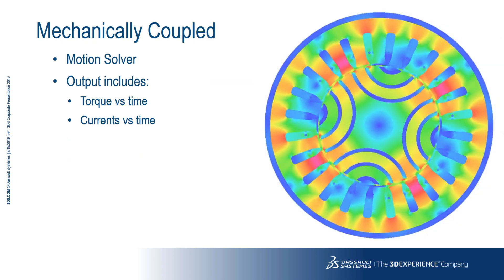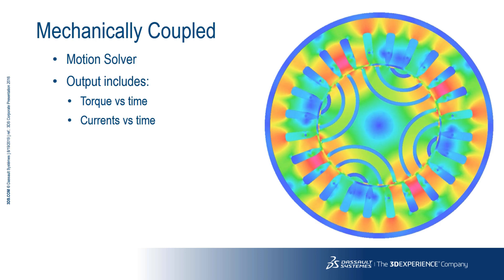The machine's environment mechanically coupled analysis for synchronous machines uses the motion analysis solver, with the movement of the rotor being calculated using the mechanical coupling equations. The default output from this analysis is a plot of the torque versus time and currents versus time curves.